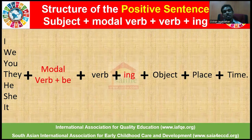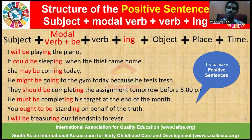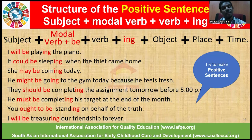The structure is: subject, modal verb plus 'be', verb plus ING, with object, place, and time. Examples: 'I will be playing the piano.' 'It could be sleeping when the thief came home.' 'She may be coming today.' 'He might be going to the gym today because he feels fresh.' 'They should be completing the assignment tomorrow before 5 PM.' 'He must be completing his target at the end of the month.' 'You ought to be standing on behalf of the truth.' 'I will be treasuring our friendship forever.' In all sentences, the structure is: subject, then modal verb with 'be', then the main verb with ING.